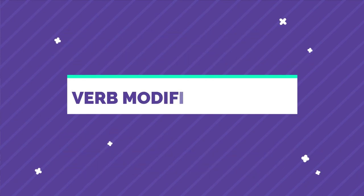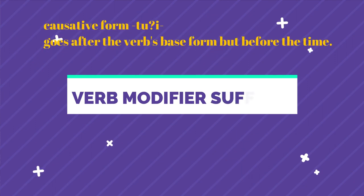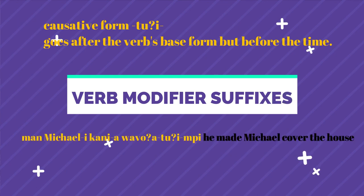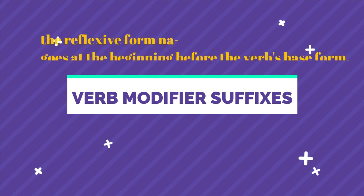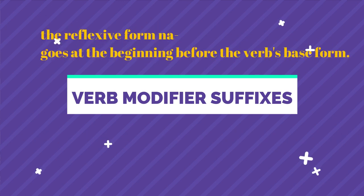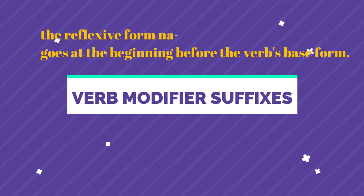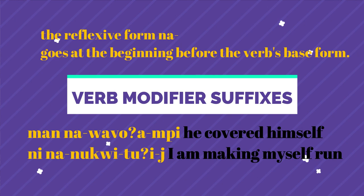Different verb modifiers lie in different positions around the verb. For example, the causative form -tui goes after the verb's base form but before the tense: man michaeli kania wa voa tuimpi means he made Michael cover the house. The reflexive form goes at the beginning before the verb's base form: man na wa voampi means he covered himself; ni na nukui tuim means I am making myself run.